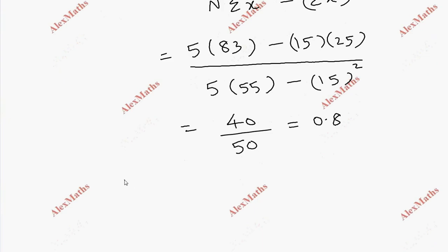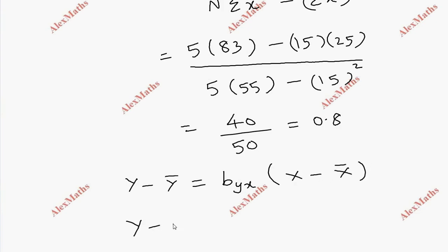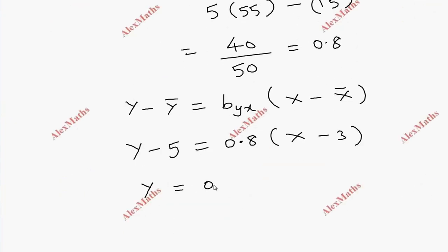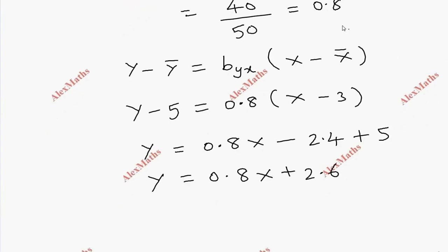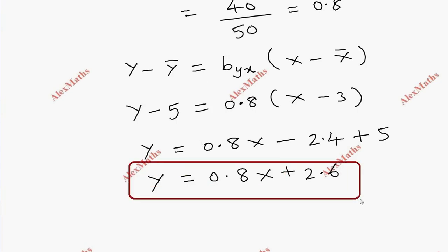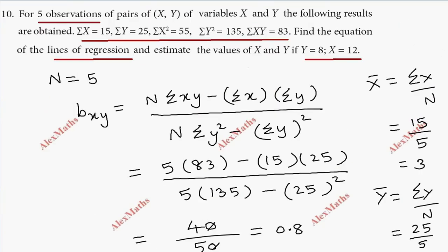Using the formula y minus y bar equal to byx into x minus x bar. So y minus 5 equals 0.8 into x minus 3. So y equals 0.8x minus 2.4 plus 5, giving y equal to 0.8x plus 2.6.